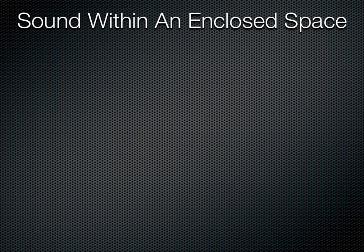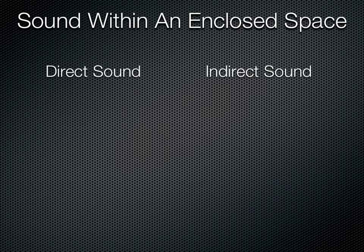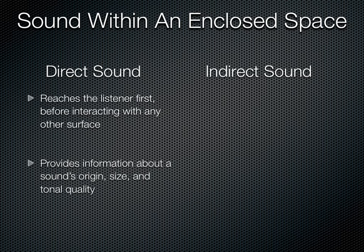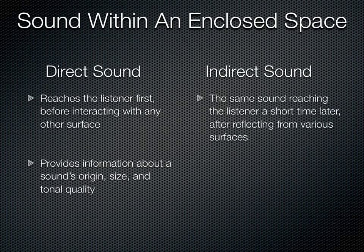When a sound is emitted in a room, it produces a direct sound and an indirect sound. The direct sound is the sound that reaches the listener first. It provides information about a sound's origin, size, and tonal quality. The indirect sound is the sound that reaches the listener later, after reflecting from various surfaces.